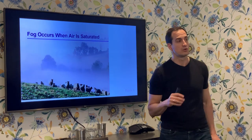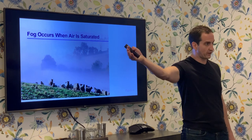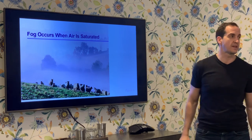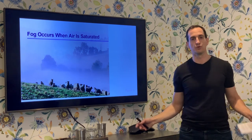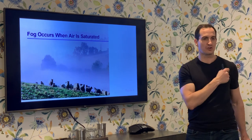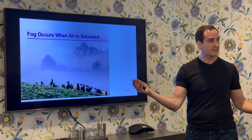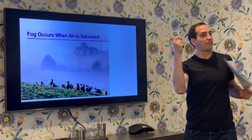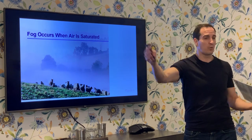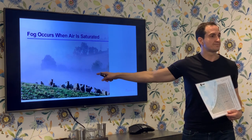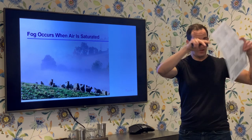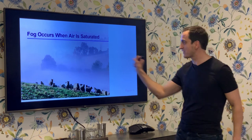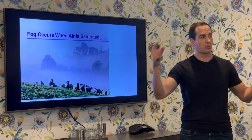Dew occurs when surfaces reach the dew point temperature. Fog occurs when the air is saturated. In Santa Cruz all summer long, when the temperature is 60°F and the air coming in off the ocean has been cooled down to 60°F with moisture at 100% — having picked up all that water off the ocean — it rolls in as fog. Fog is air that is saturated with water and can no longer hold any more. If you tried to mist water into it, that water would bead up, form raindrops, and fall out.